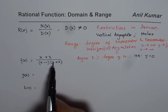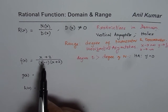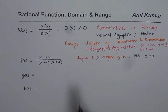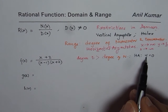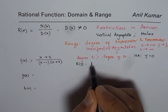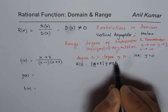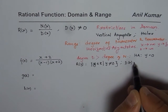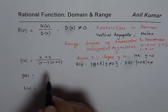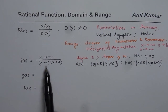When x is very large, the function approaches 0. So the range is y belongs to real numbers but y ≠ 0. As far as domain is concerned, equate the denominator to 0: x belongs to real numbers but x ≠ 1 and x ≠ -2.